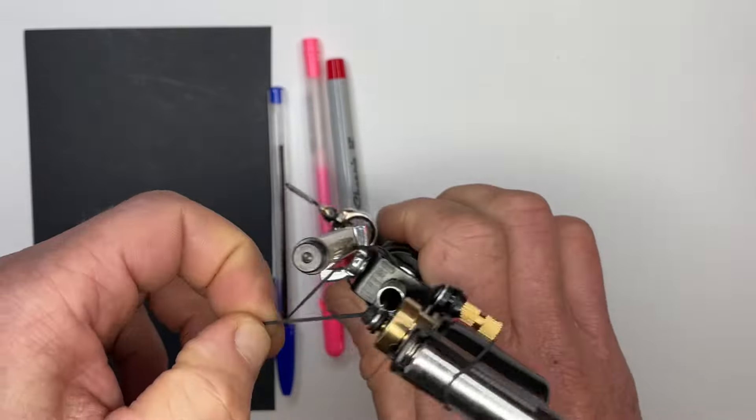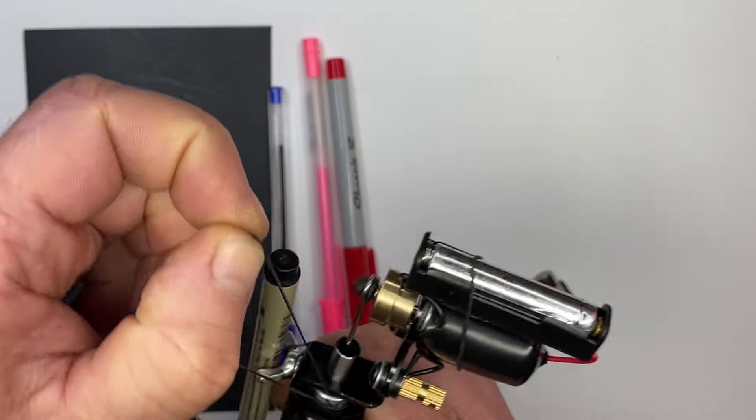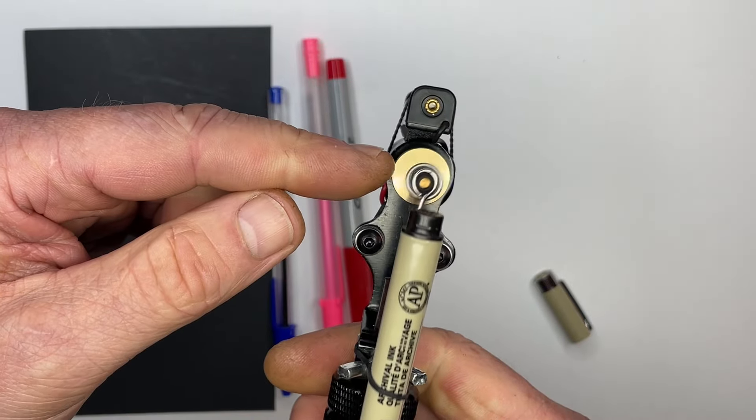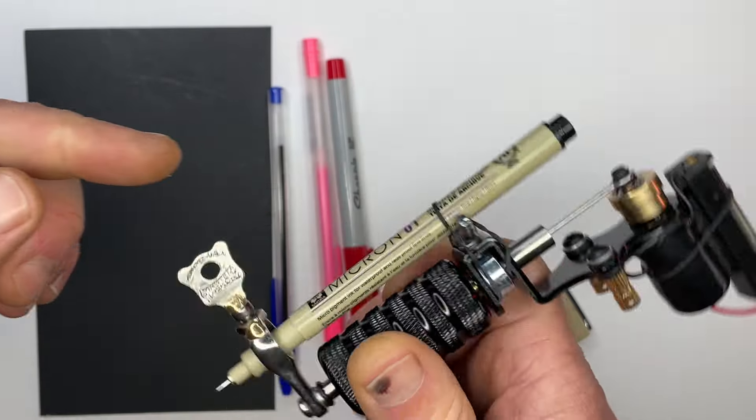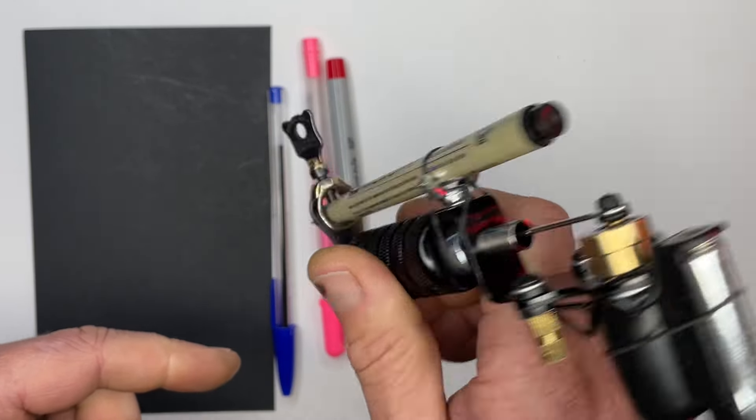And what this rubber band here is doing is keeping the pen from wobbling all over the place. If that rubber band's not on there, I'll show you. See how the pen kind of wobbles? That's due to the fact that at the top it's going side to side.